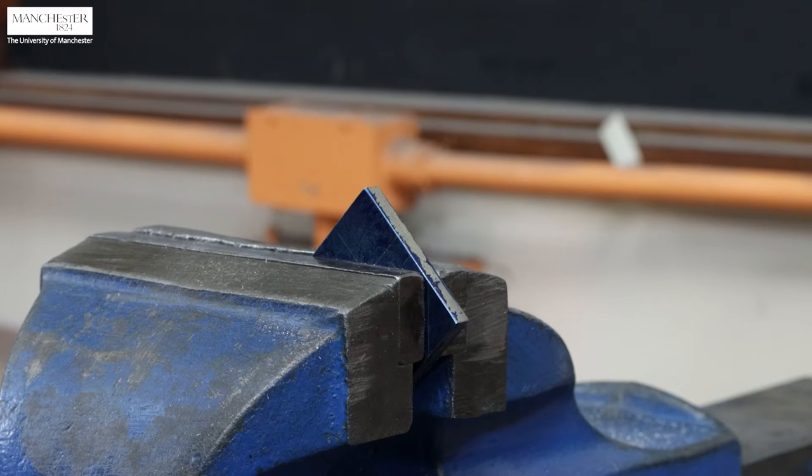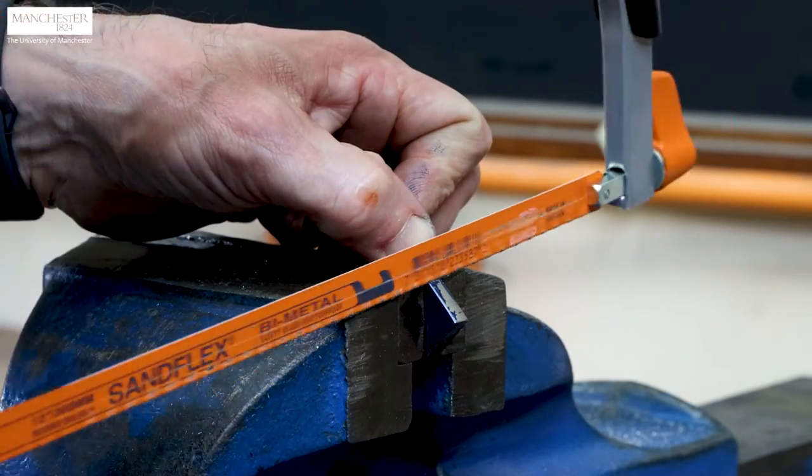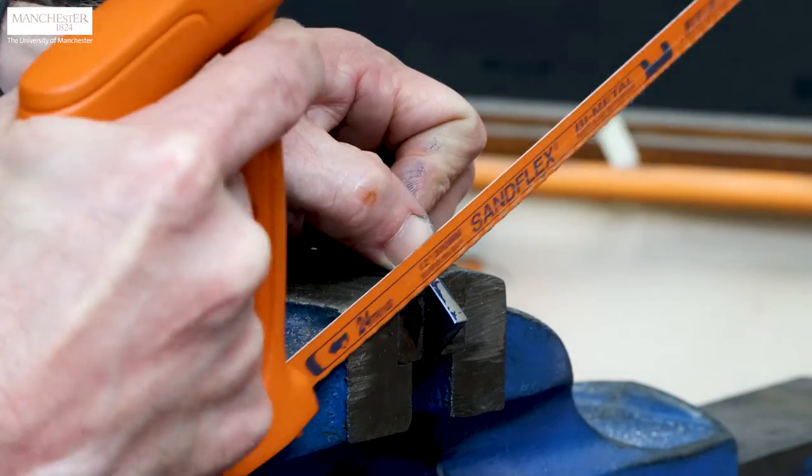For sawing off the angled corner, clamp the workpiece while keeping the marked line close to the vise. Using a hacksaw, carefully cut the angled corner by following the marked line.